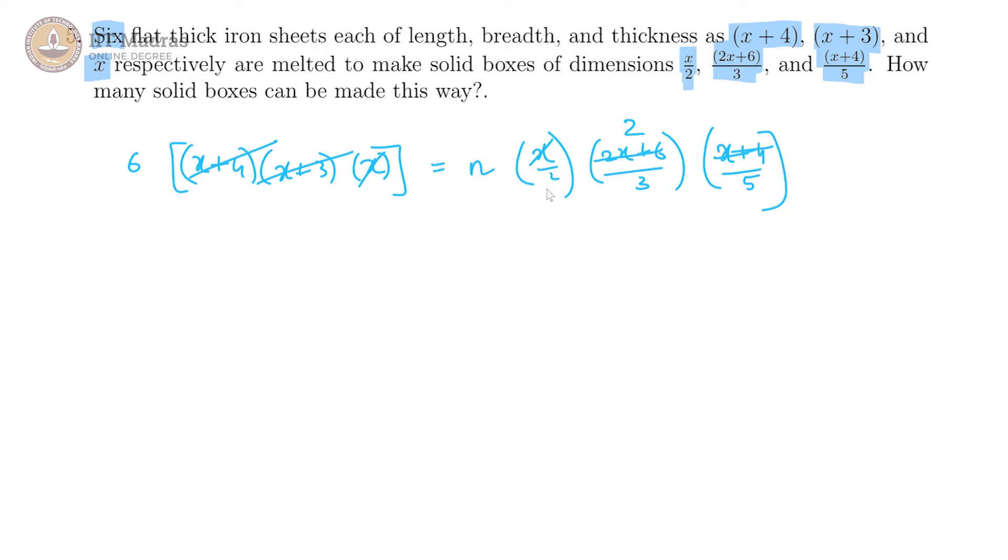This is one time and this is two times. So what we get is 6 equals n times 2 divided by 2 times 3 times 5. Two and two also cancels. This implies n equals 6 times 3 times 5, and that is 90. So you get 90 boxes overall.